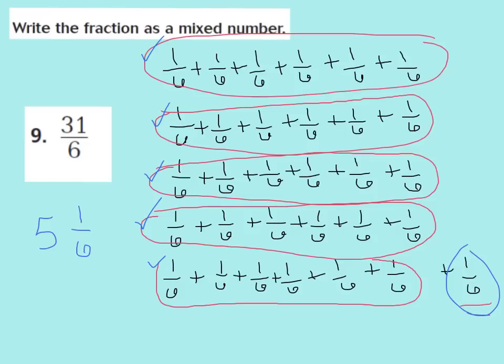Earlier in the year we also learned that you could do division to figure out what an improper fraction equals as a mixed number. We can say that 6 goes into 31 five times, which would be 30, and then we have 1 left over, keeping the denominator the same. I can check this with multiplication and addition: 6 times 5 is 30, and 30 plus 1 is 31, keeping the denominator the same. So 31 sixths is 5 and 1 sixth.